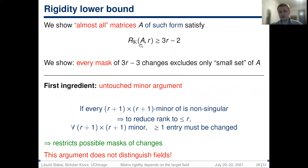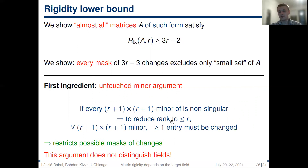Our proof consists of two ingredients. The first ingredient restricts the possible masks of changes, and the second analyzes every fixed mask. The first ingredient is the so-called untouched minor argument, which says that if there is a nonsingular (R+1)-by-(R+1) minor, then to reduce the rank of the entire matrix to R, at least one entry in that minor must be changed. This restricts the possible masks. However, this argument does not distinguish between fields and hence cannot alone show a separation of rigidities over different fields.